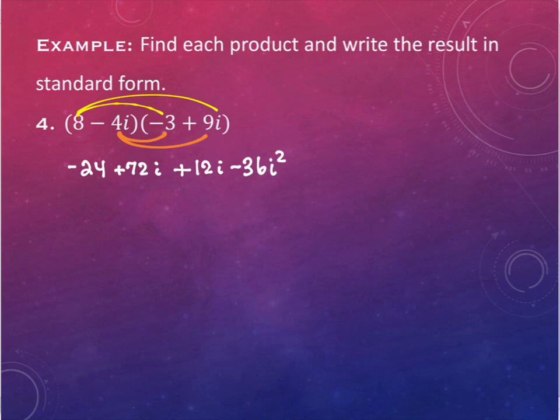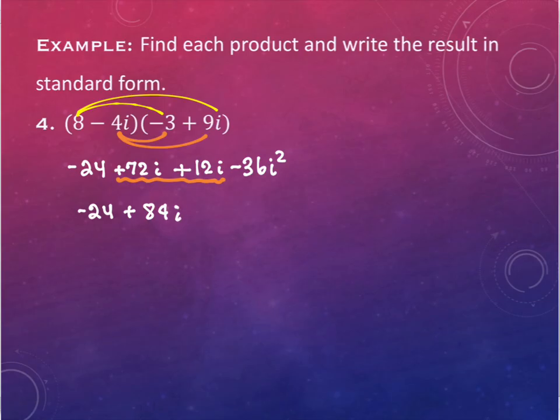These two in the middle combine — they're like terms. So I have negative 24. What happens when I have positive 72i plus 12i? I have positive 84i.